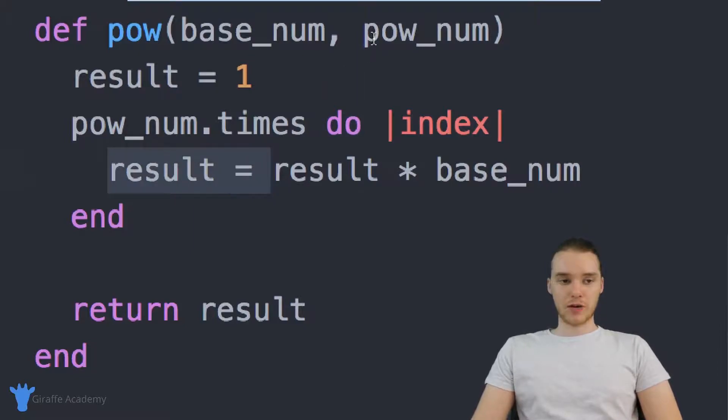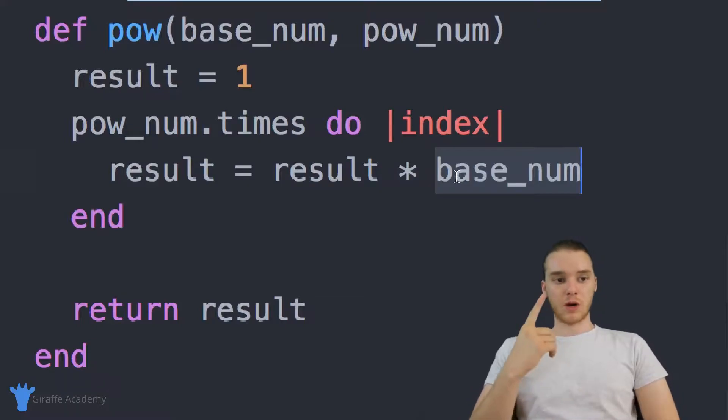So if pow_num is three, we're going to loop through this code three times. If pow_num is 10, we're going to loop through this code 10 times. And every single time we go through this code, we're going to multiply result times the base_num. So the first time through the loop, it's just going to be result, which is one times base_num. So result's going to end up just being base_num. Second time through, it's going to end up being like base_num squared. Third time through, it's going to end up being like base_num cubed. So this is essentially how we can go ahead and write this method.